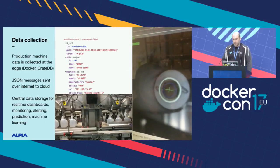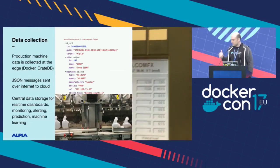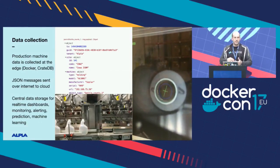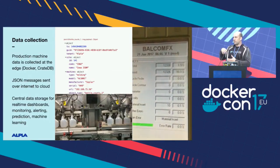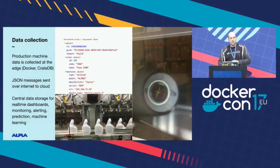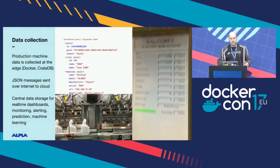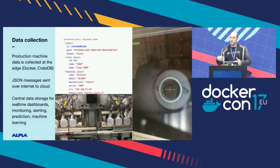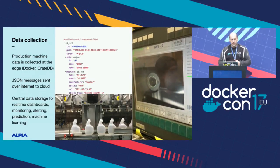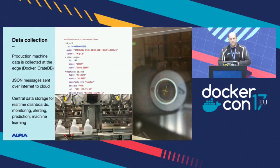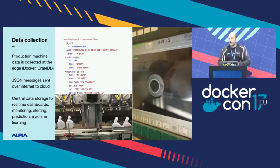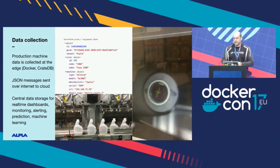Everything starts with data collection. You can see how the bottles are measured — there is a camera sensor that measures the thickness of each bottle and checks if it's fine. On the edge, at the machine, the data is collected, and we are already using Docker there. A message is generated and sent over the internet to the cloud, where there is central storage used for dashboarding, monitoring, alerting, machine learning, and predictive maintenance.